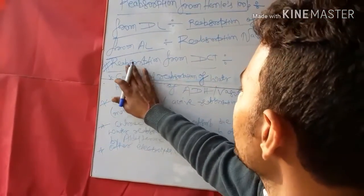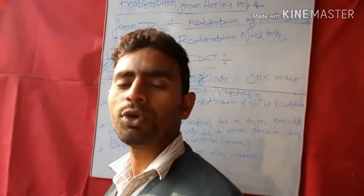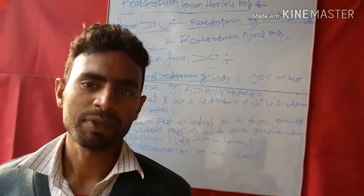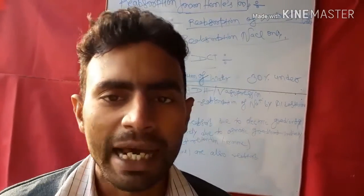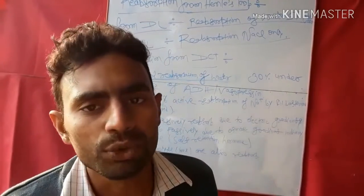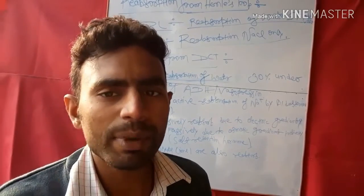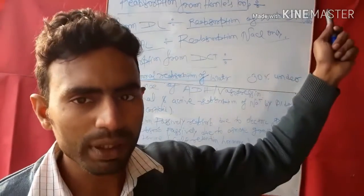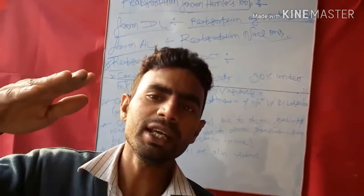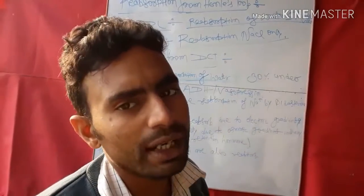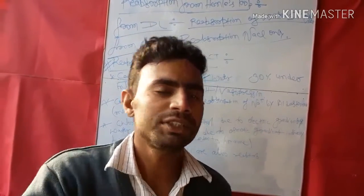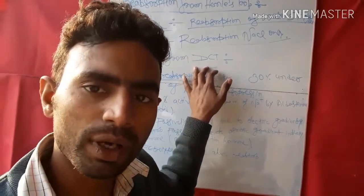The second point is reabsorption from the distal convoluted tubule. As you know, one nephron has three parts: the first part is called the proximal convoluted tubule, the second part is called Henle's loop — which has two parts, the ascending limb and the descending limb — and the third part is called the distal convoluted tubule.